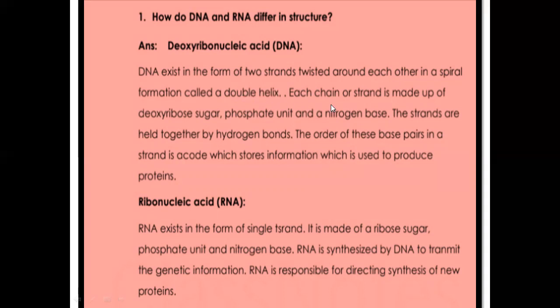Each chain or each strand is made up of three components: deoxyribose sugar, phosphate unit, and a nitrogen base. These three are the components of each strand. The two strands are held together by a hydrogen bond — the two strands are on opposite sides, twisted around each other and held together by hydrogen bonds.